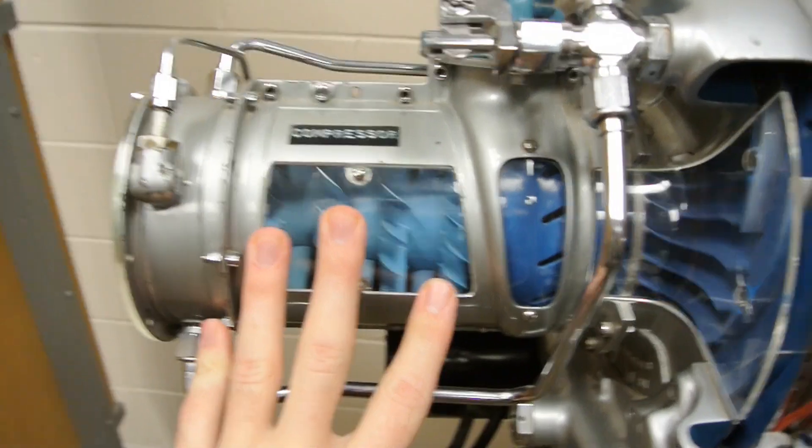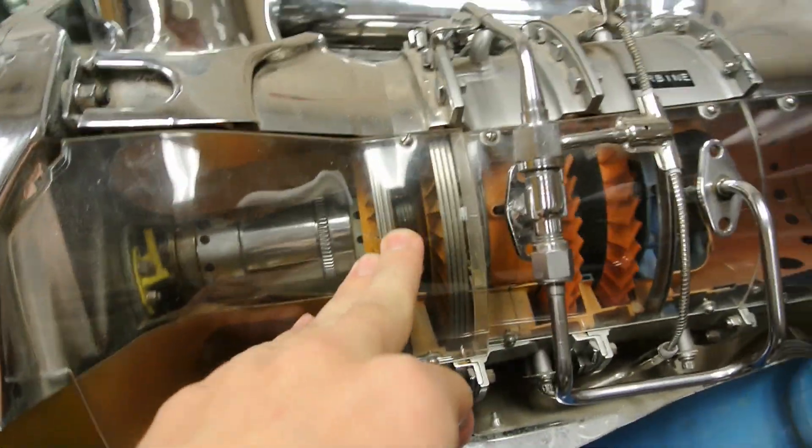So the compressor spins anywhere up to 50,000 RPM, and the power turbine spins about 30,000 RPM.